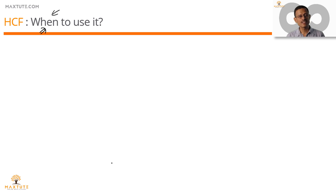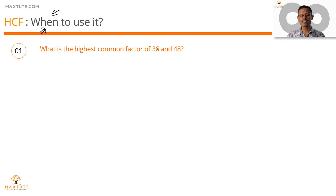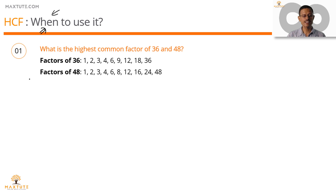We'll start with HCF. The clue to knowing when to use HCF comes from what the HCF actually is. So let's recap what the HCF is. We'll find the HCF of 36 and 48. First step, we would have factorized both these numbers — listed down the factors of 36 and 48.